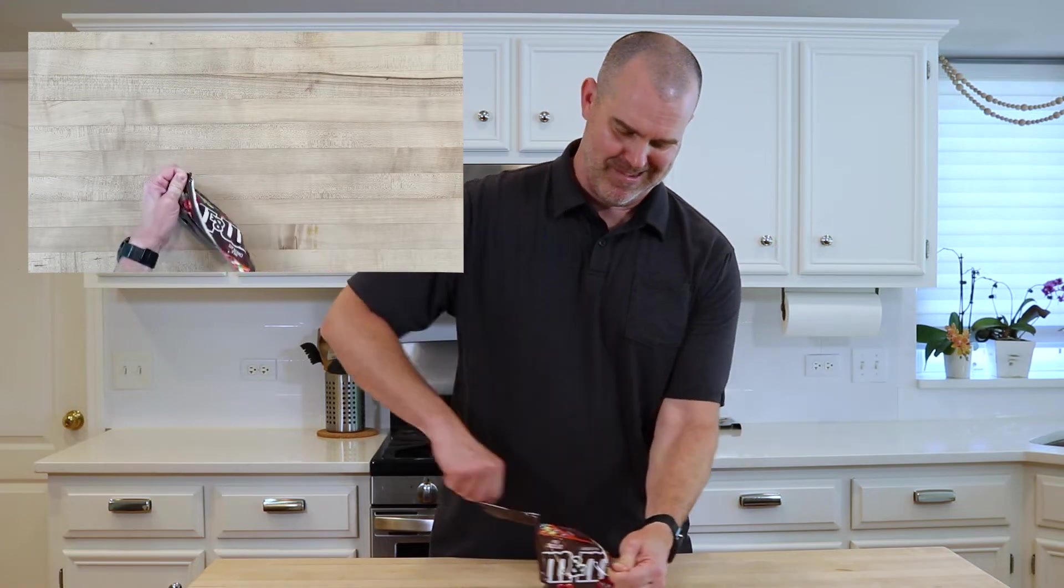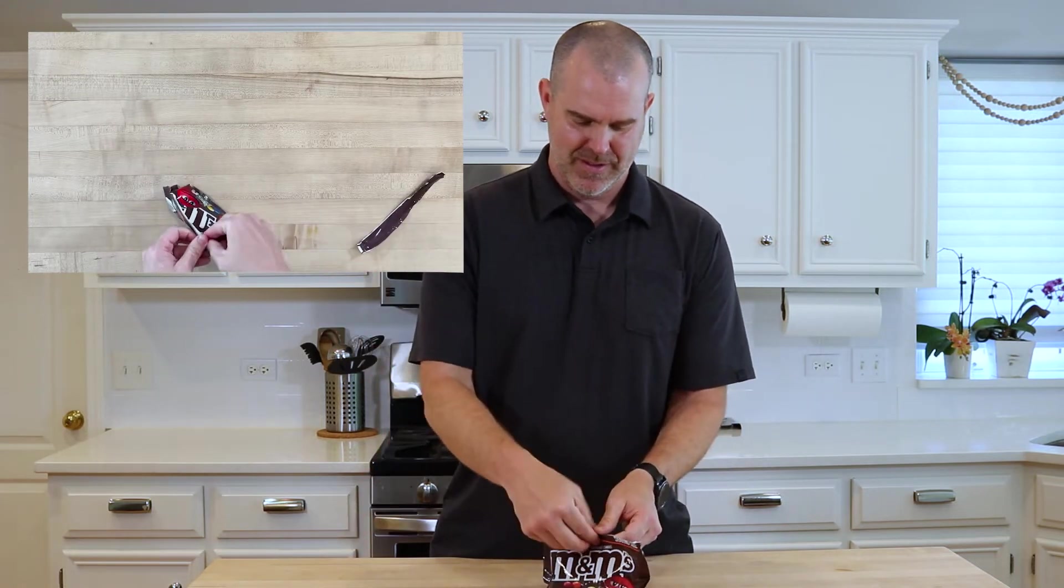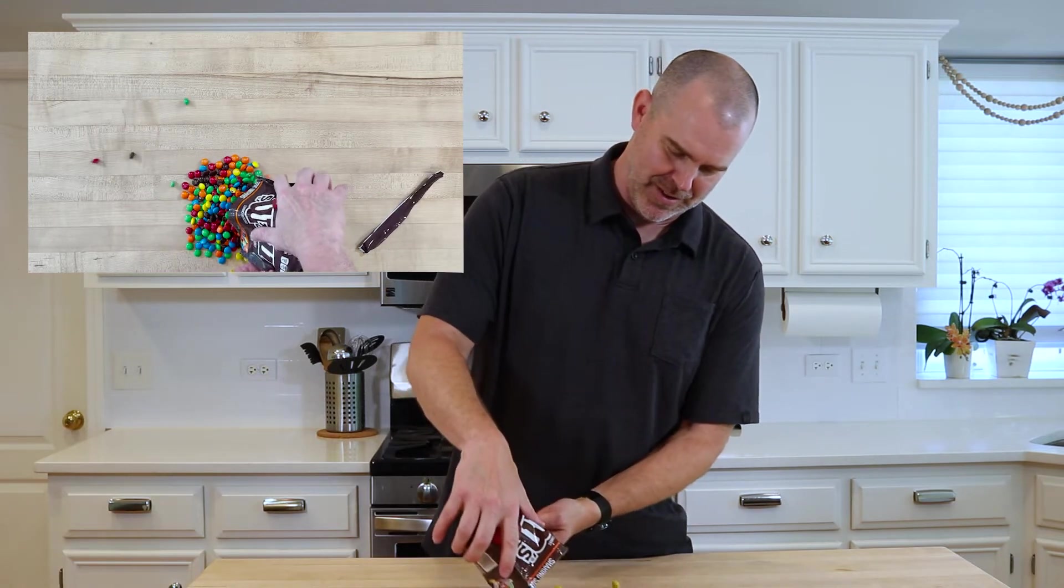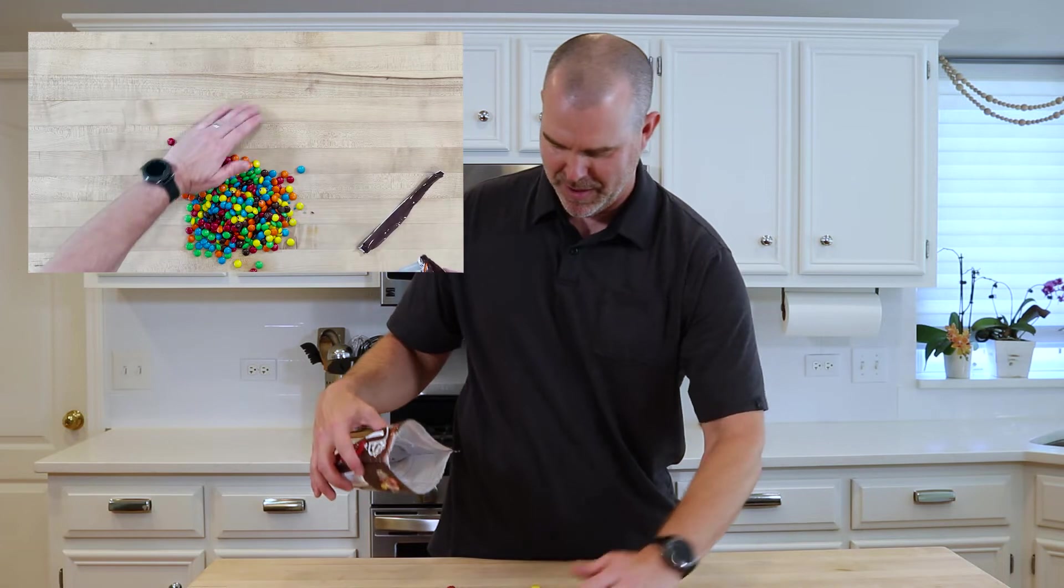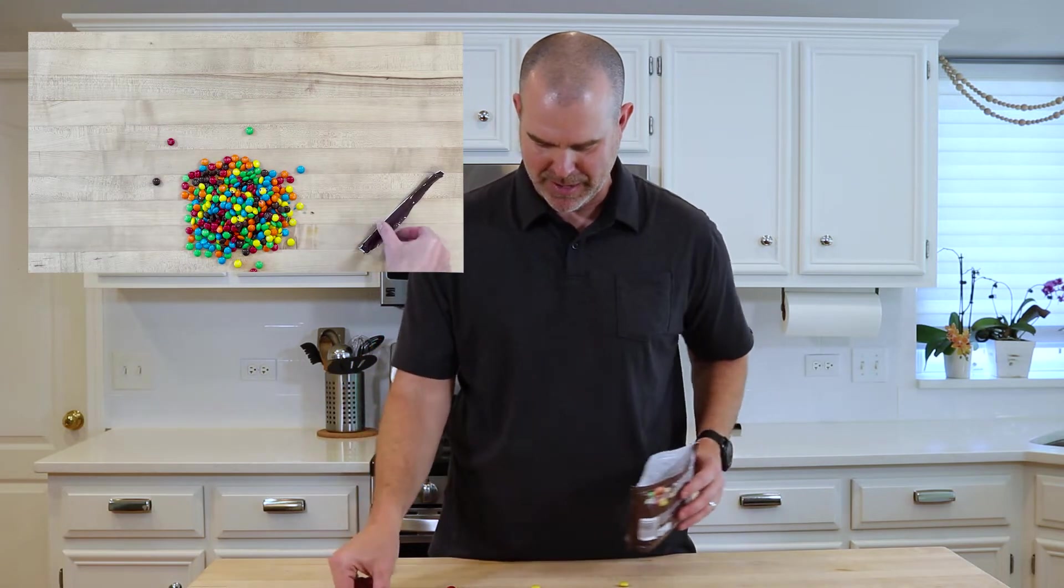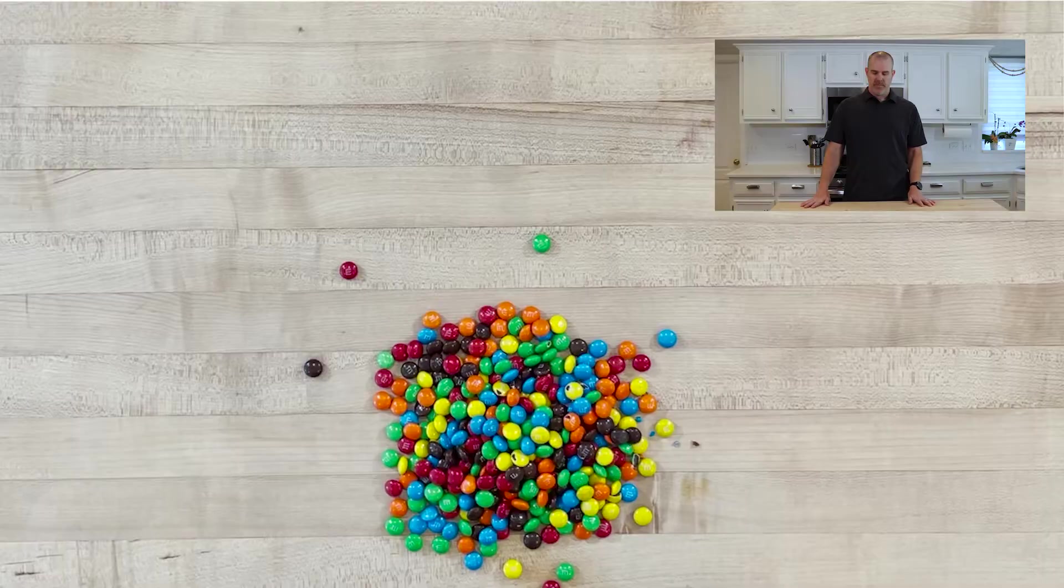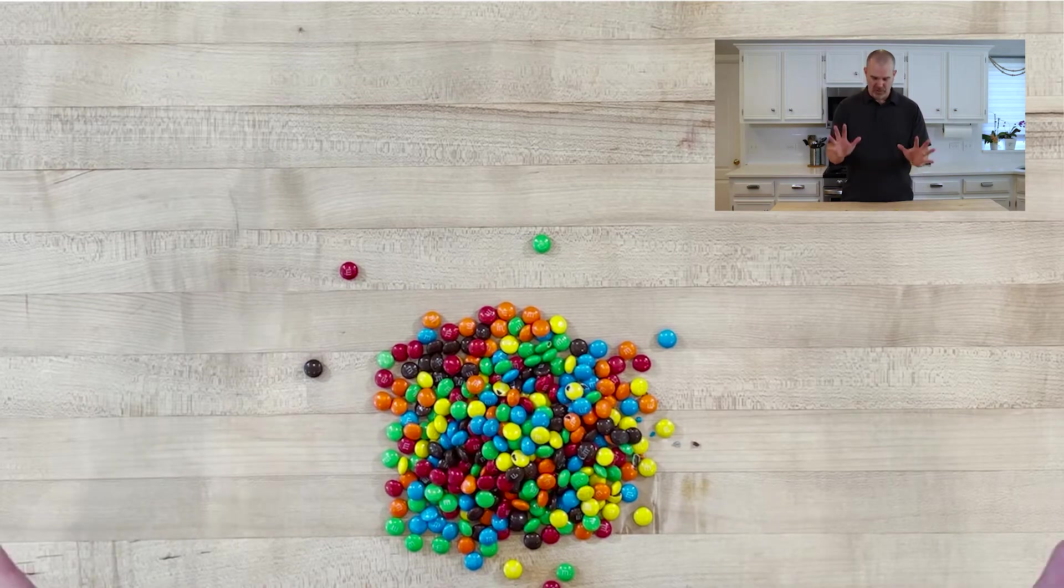So, the only way to do this is to open up this bag, dump them all out, and start counting the colors. Alright, here we go. Oh, that is a lot of M&M's. Oh, this may have been a bad idea. I'm going to be counting a long time. Alright, let's start sorting these.